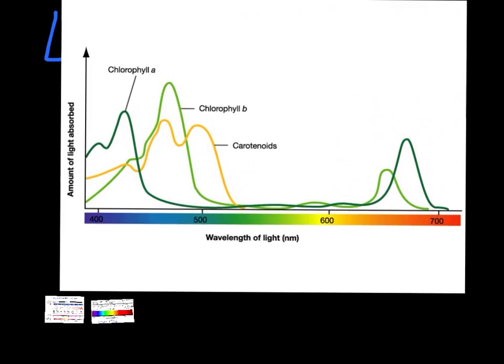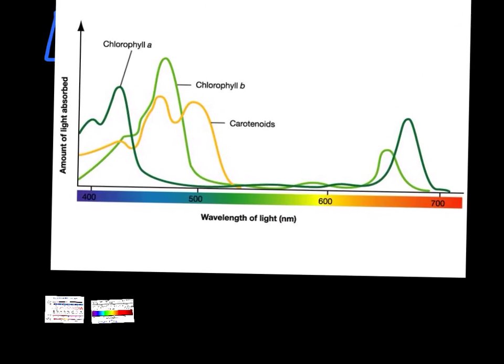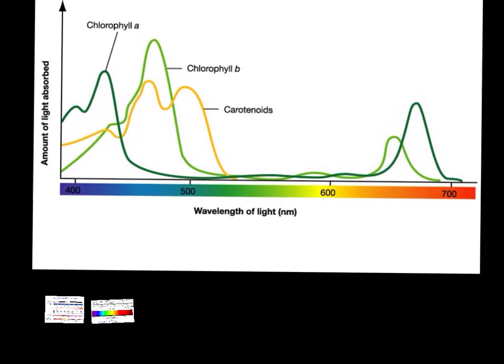There's actually lots of pigments, but the main ones are chlorophyll A and B. And if we look at this diagram, it shows us why that's important. So along the bottom, if you notice, we've got the wavelength spectrum again. Chlorophyll A, which is shown in this dark green line, chlorophyll A absorbs a lot of the stuff in the blue spectrum.